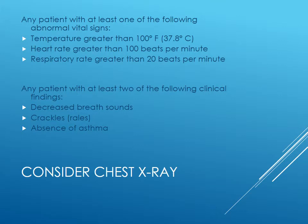You don't want to get a chest x-ray on everybody who walks in with viral bronchitis. Order one for patients who have at least one of the following abnormal vital signs: temp greater than 100, heart rate greater than 100, or respiratory rate greater than 20. Also for any patient with at least two of the following clinical findings: decreased breath sounds, crackles or rales, and absence of asthma.